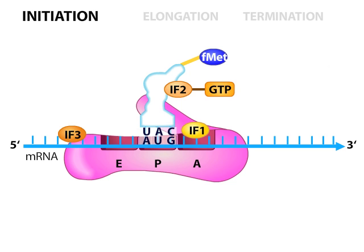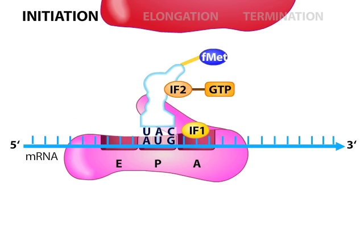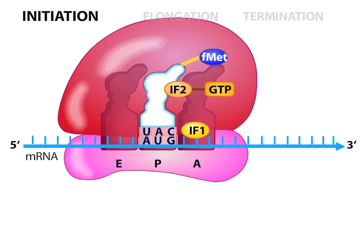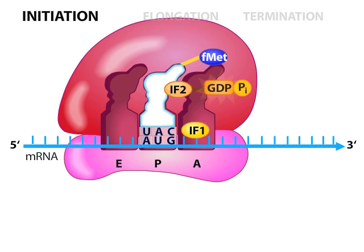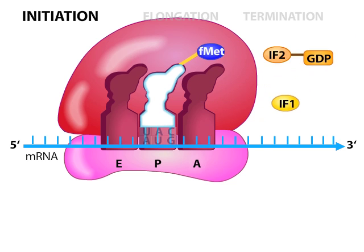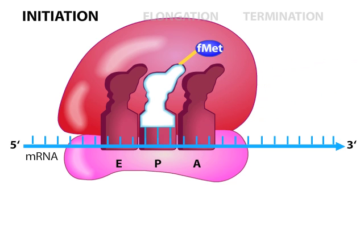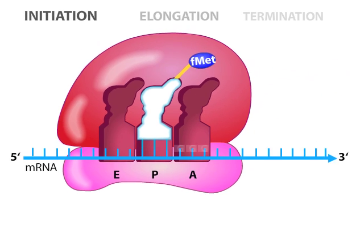Once the initiator tRNA is in place, IF3 is released. With the loss of IF3, the 50S subunit can dock on the 30S subunit. The docking of the 50S subunit triggers the hydrolysis of GTP on IF2 and the subsequent release of the initiation factors. The ribosome is now ready for elongation.